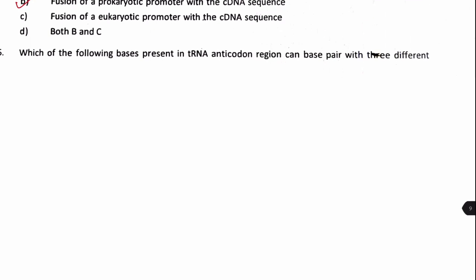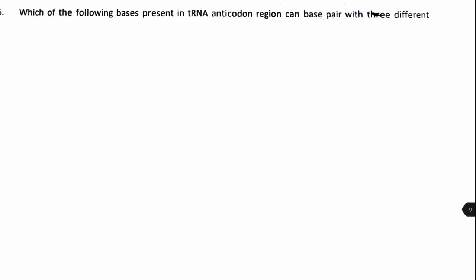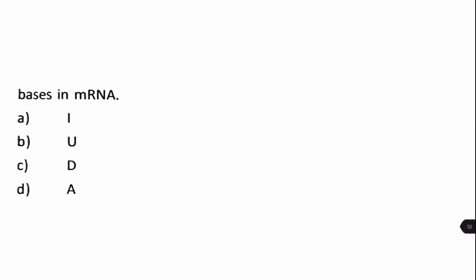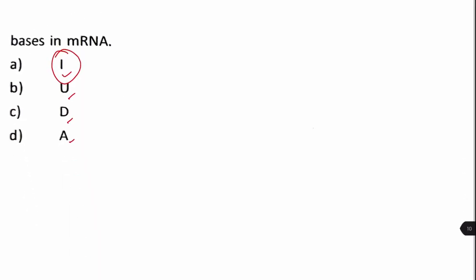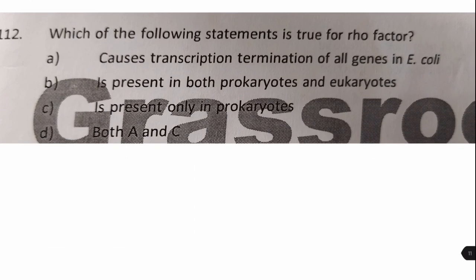Next question: which base in the tRNA anticodon region can base pair with three different bases in mRNA? The answer is inosine (I), also written as the base inosine in the anticodon, which can pair with three different bases due to wobble base pairing. Answer: option A.